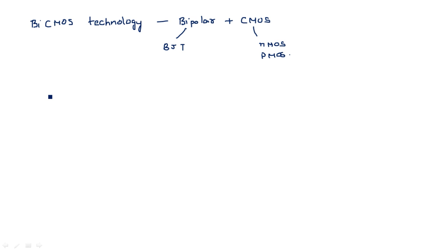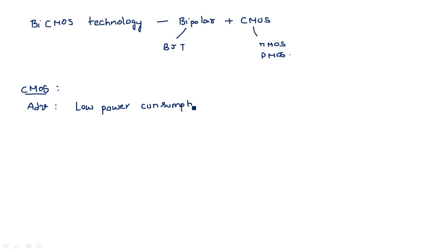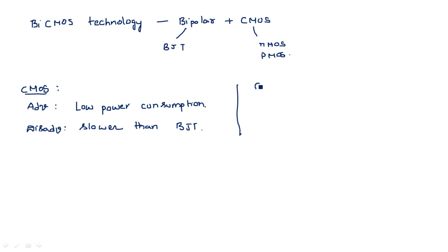What is the advantage of bipolar technology and what is the advantage of CMOS technology — why are we going to mix them? CMOS technology has one advantage: very low power consumption. However, the disadvantage of CMOS technology is that it is slow compared to BJT.